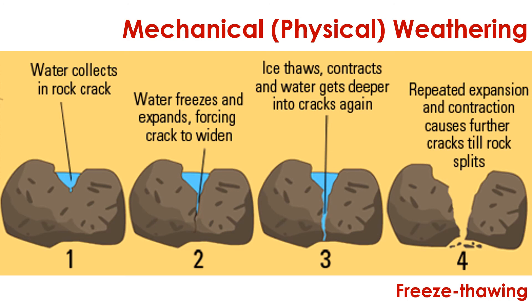With rocks, we refer to this as a form of physical or mechanical weathering. Mechanical weathering is any natural process that breaks a rock down into smaller pieces through direct physical contact. Freeze-thaw is one of the most common forms of mechanical weathering, particularly in regions with cold climates. Whenever water freezes inside a crack within a rock, it expands and causes the crack to widen. When the ice melts, the water flows potentially deeper into the rock, where it may again freeze and cause further damage.